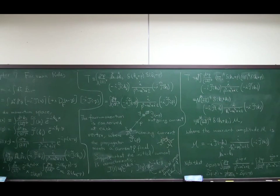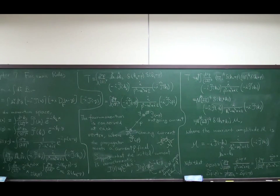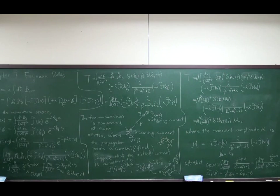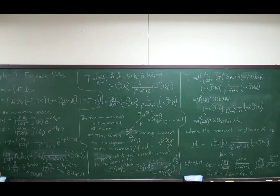So in the momentum space — the reason why we consider momentum space is that usually in particle physics, initial and final states are prepared to be in a momentum eigenstate. So it is good to use momentum space instead of configuration space. Our convention is that the integral over spacetime dimensions does not have any 2π, and instead, either X and P are conjugated, and one of them has all factors of 2π.